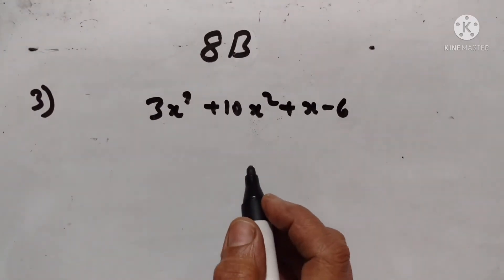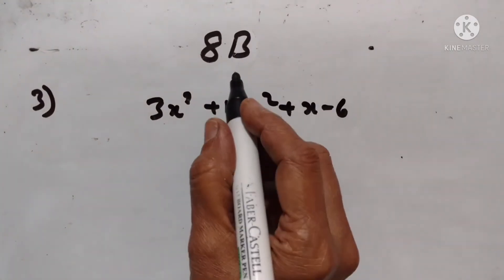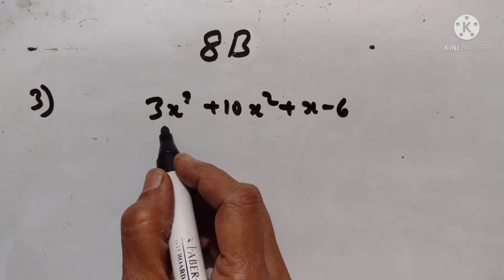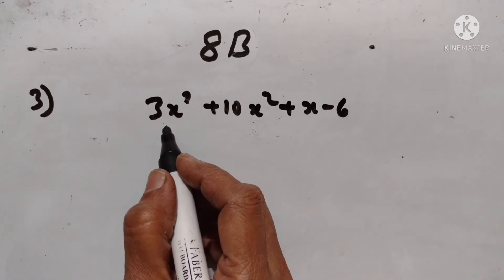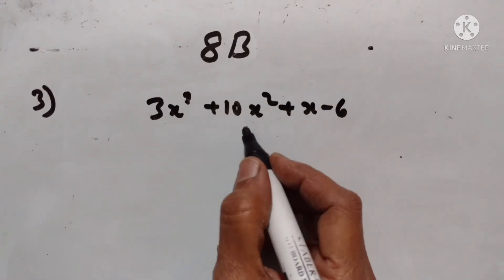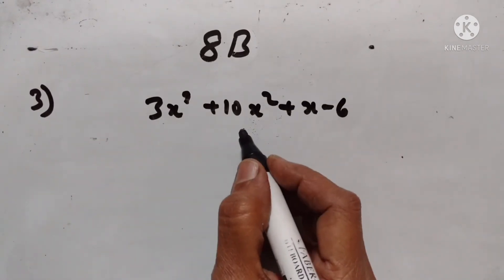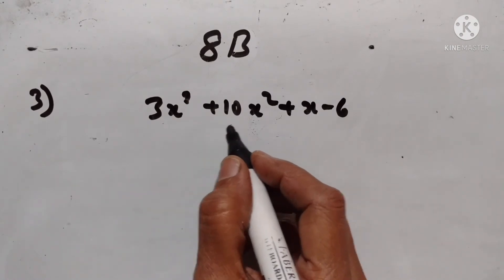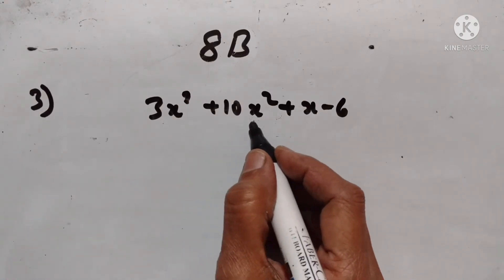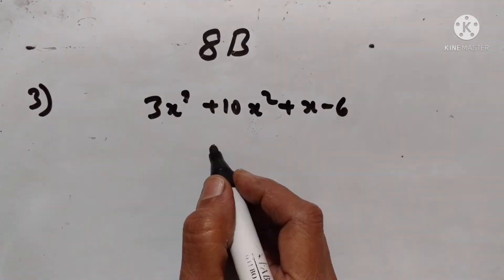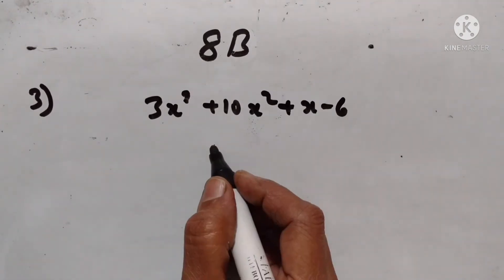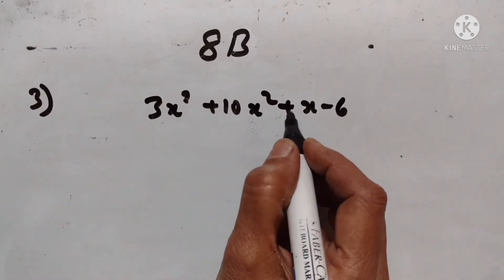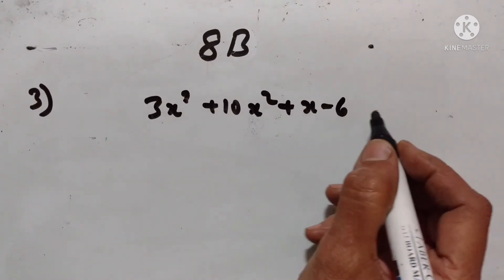Hello students, welcome back. Let's continue with Exercise 8B. Third problem: using the remainder theorem, factorize the expression 3x³ + 10x² + x - 6. Hence, solve the equation 3x³ + 10x² + x - 6 = 0.